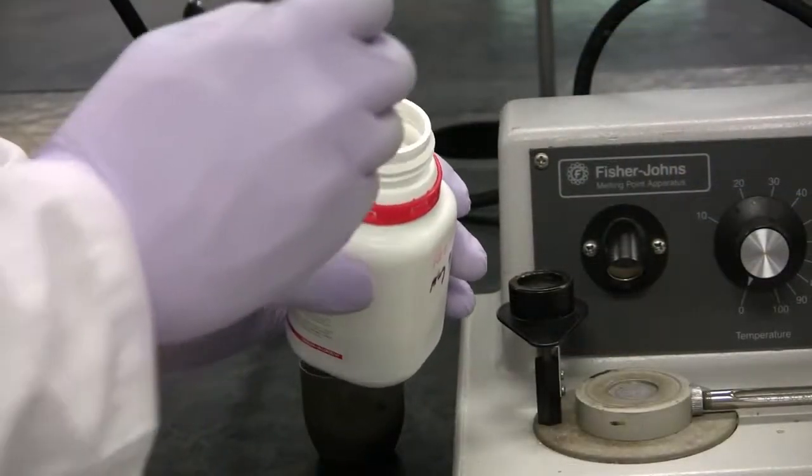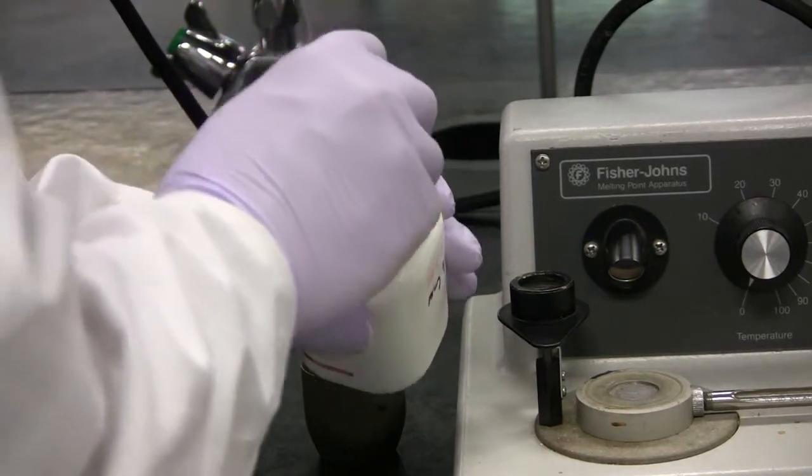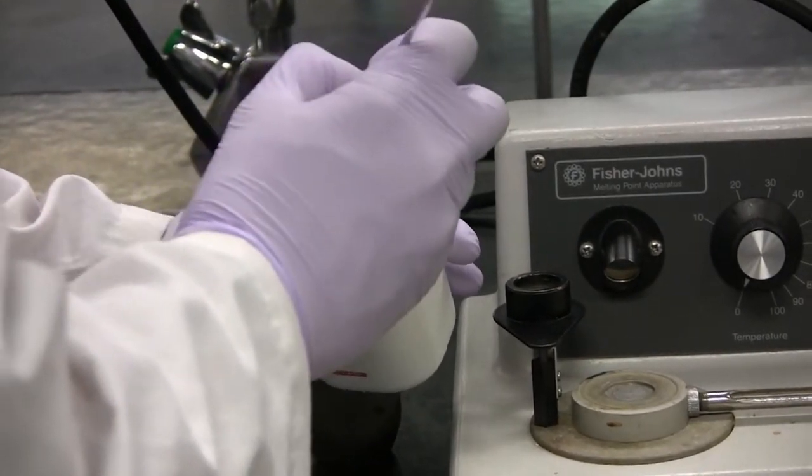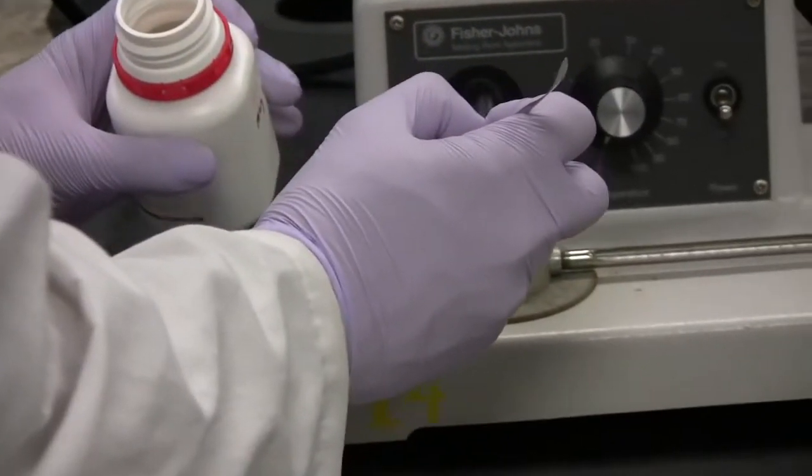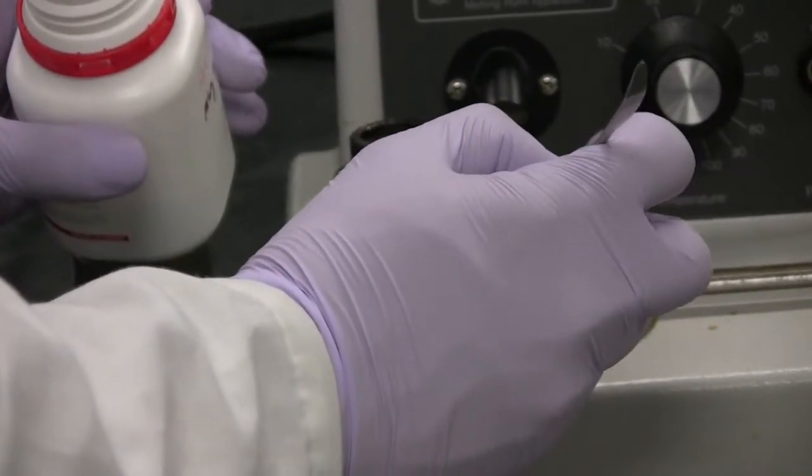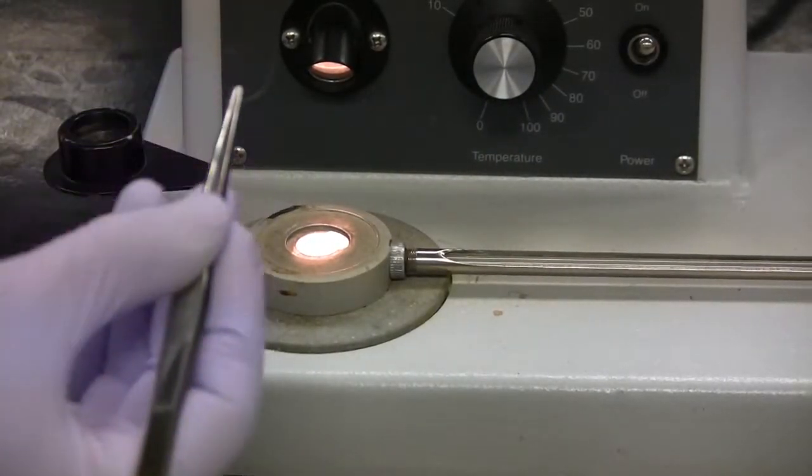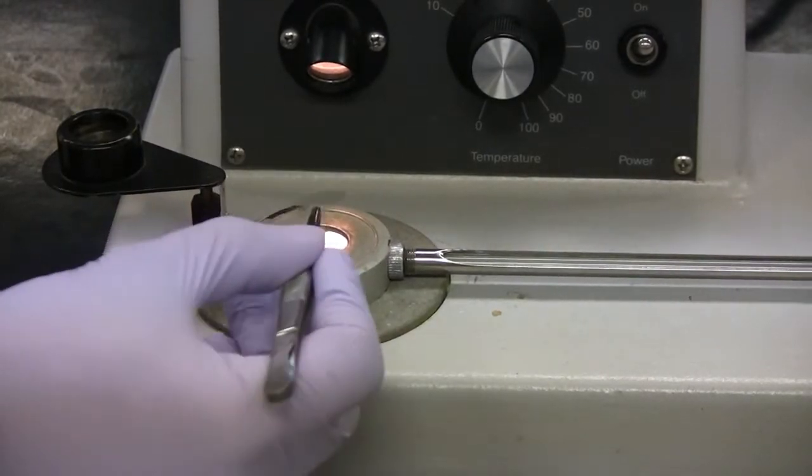Using the spatula, pull out the tiniest crystal you can possibly get and place this onto the cover slip. Now, place a cover slip on top of your crystal.